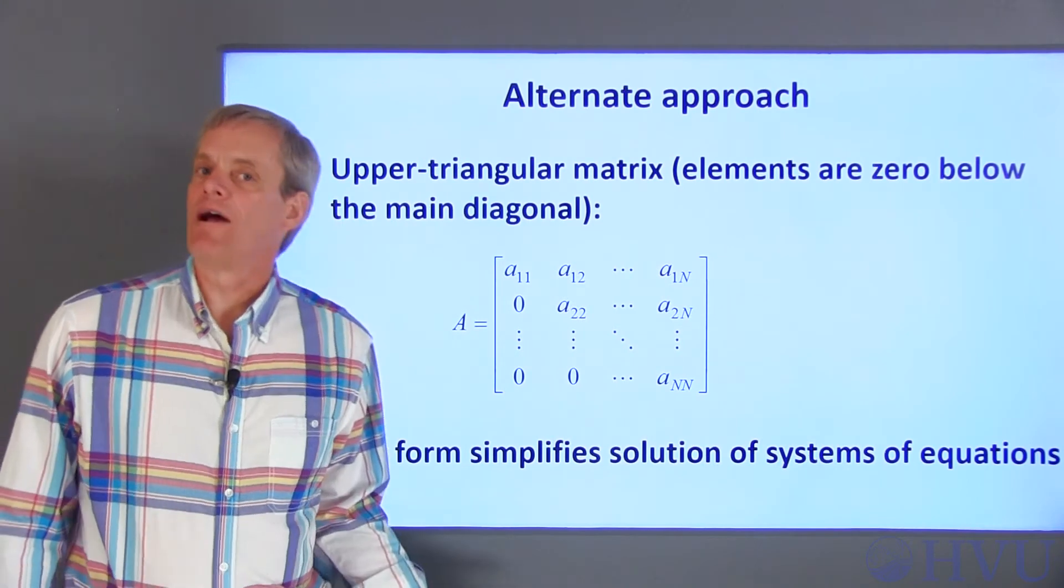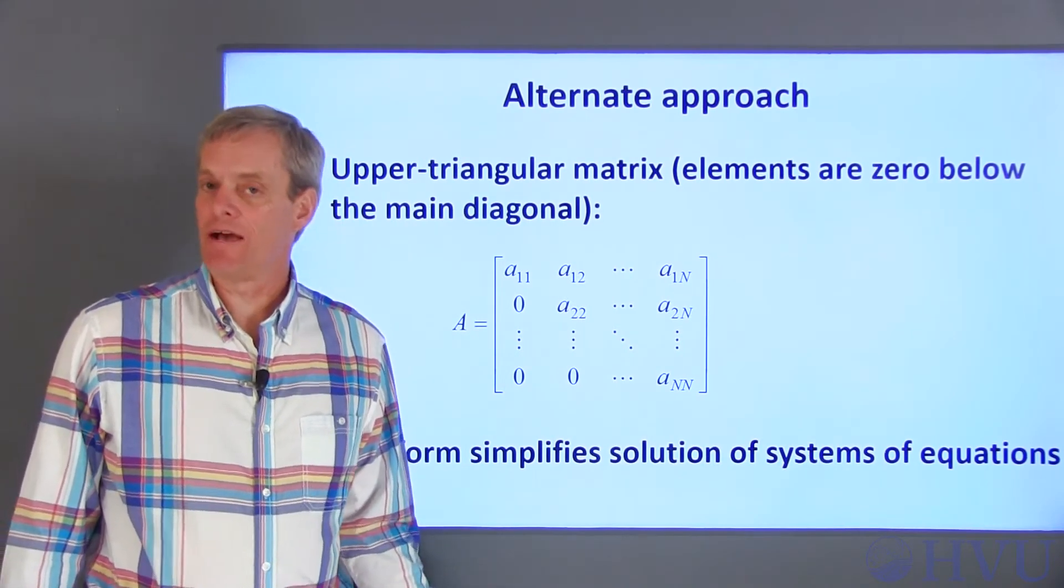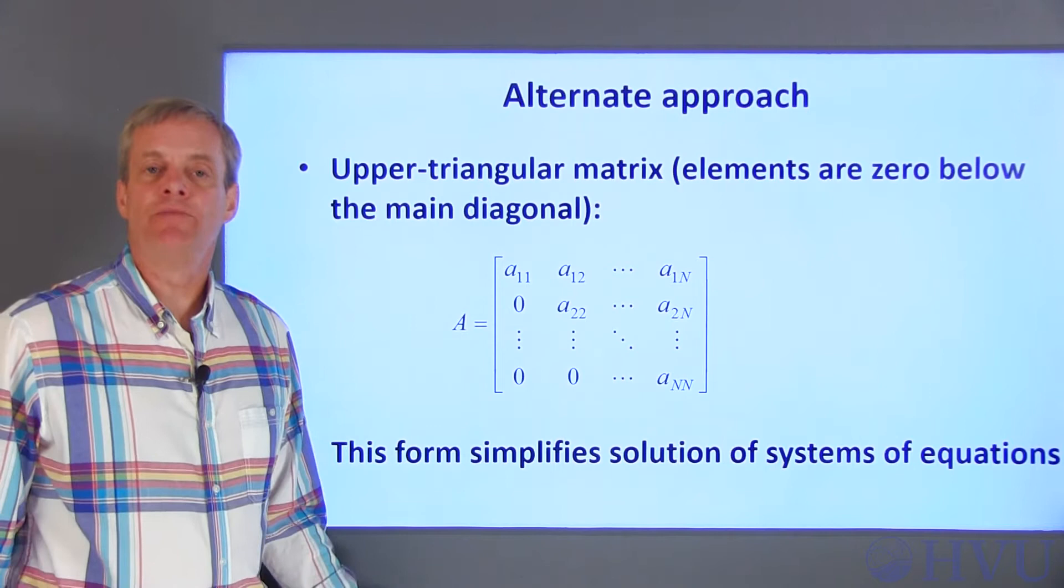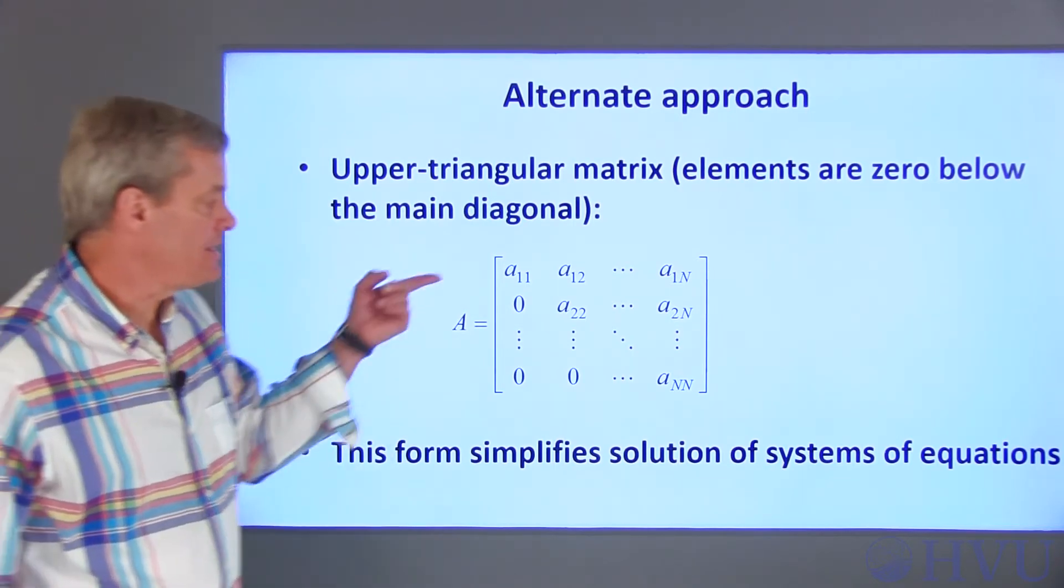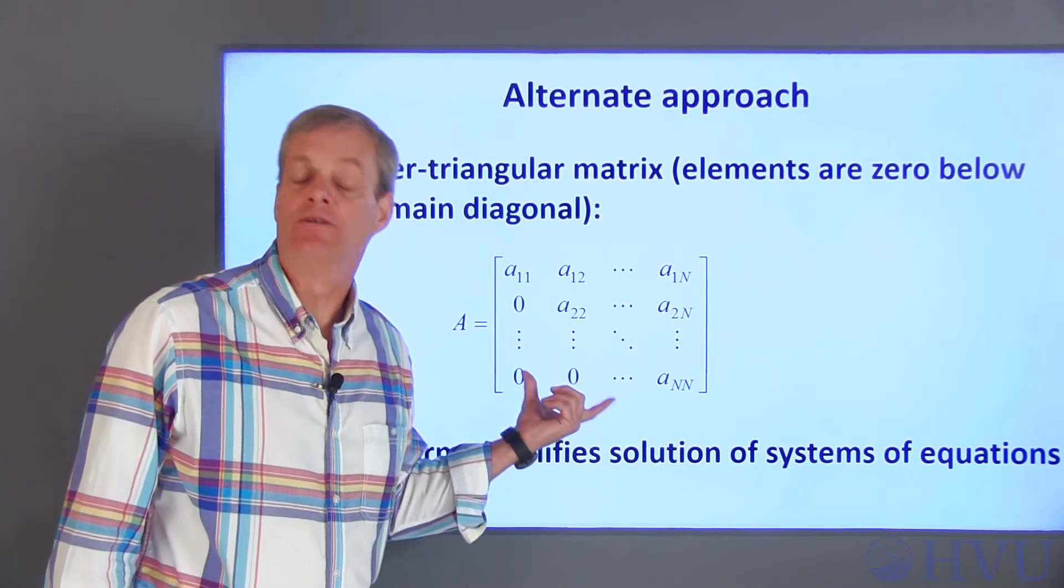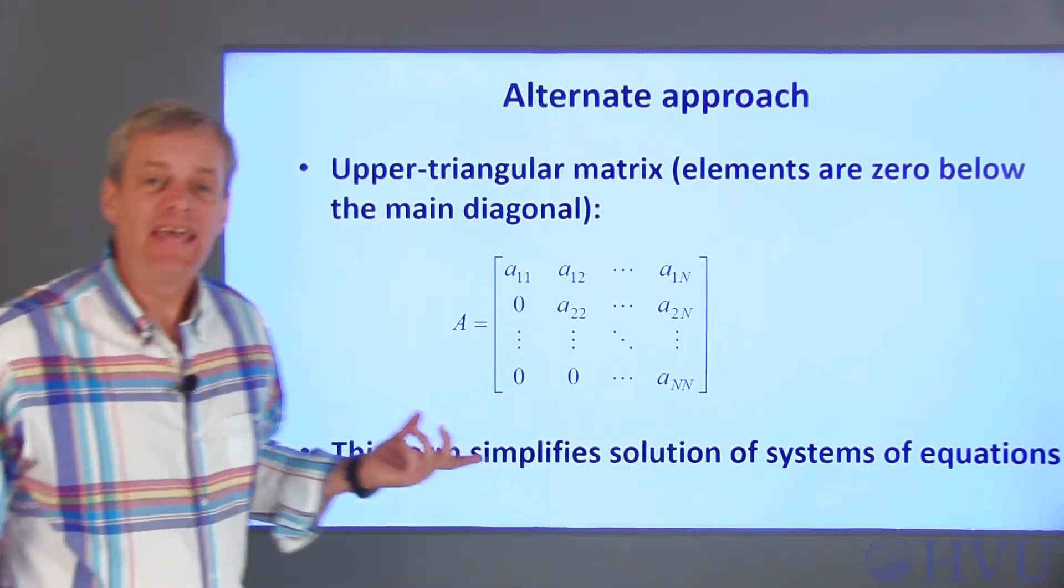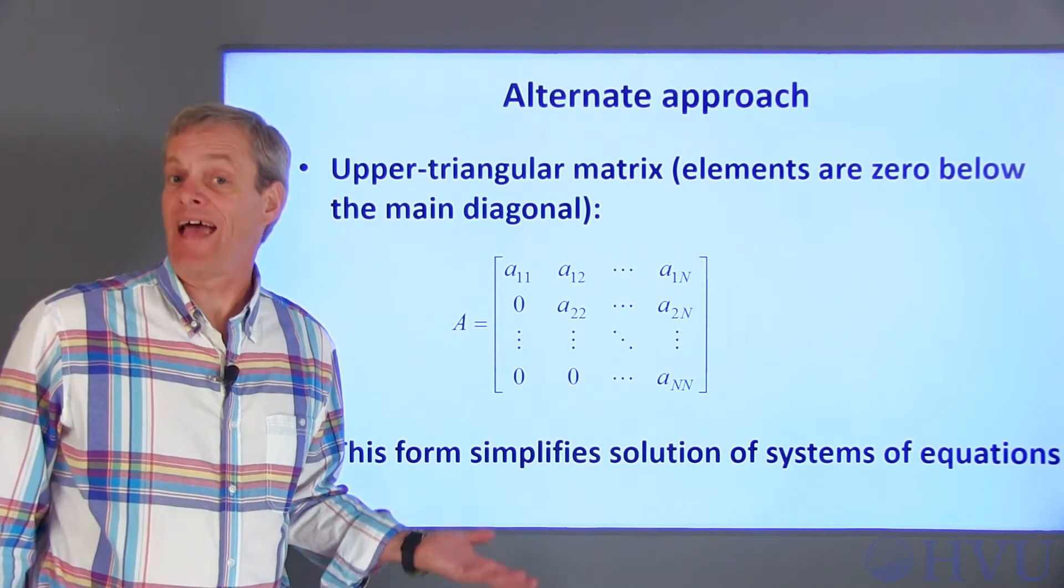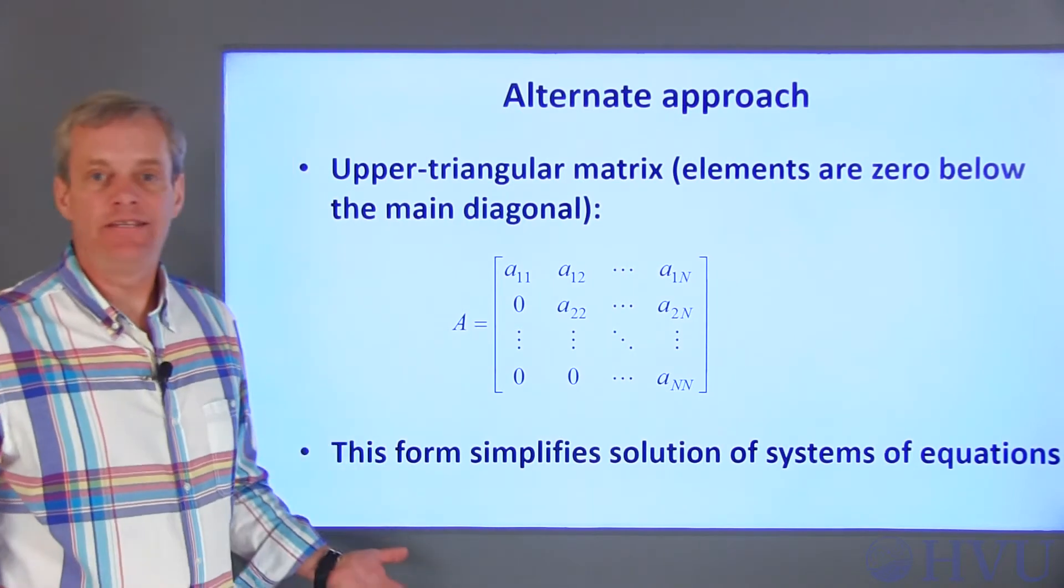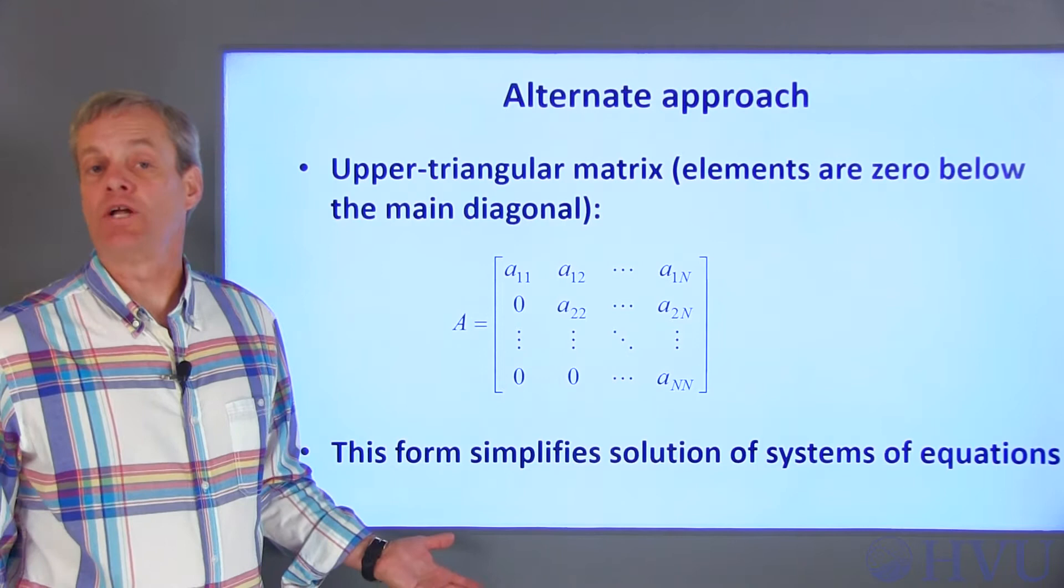We can get around some of the problems associated with calculating an inverse with a very special type of matrix called an upper triangular matrix. In this type of matrix, the elements below the main diagonal are all zero. If the matrix of coefficients A in the equations governing your system has this form, it's pretty easy to solve the equations using an approach called back substitution.